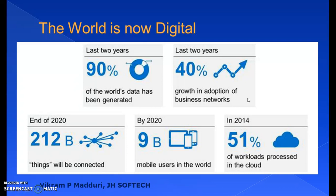90% of the world's data has been generated in the last two years. In the last two years, the adoption of business networks has increased by almost 40%, and it is estimated that by the end of 2020, 212 billion records of data would be generated and 212 billion things would be connected. By 2020, it is estimated that 9 billion mobile users in the world would be coming up.